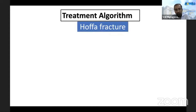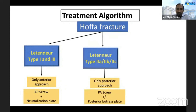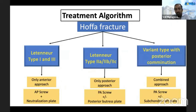In conclusion, we must have a high index of suspicion not to miss these fractures, and CT scan is necessary to evaluate the fracture, plan the approach, and plan fixation. For type 1 lateral fractures where the fracture exits anteriorly and the distal fragment is large, an anterior approach with anteroposterior screw fixation and neutralization plate is ideal. For type 2 fractures which are more posterior, a posterior approach with posterior-to-anterior screws is preferred; a posterior buttress plate increases stability when a metaphyseal spike is present. For variant types with more posterior comminution, a combined anterior approach for visualization and posterior approach for fixation is the ideal strategy.